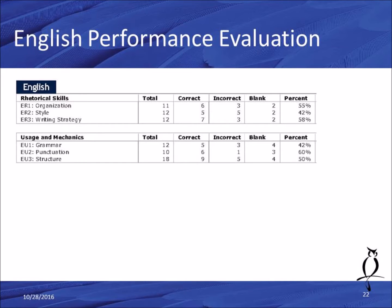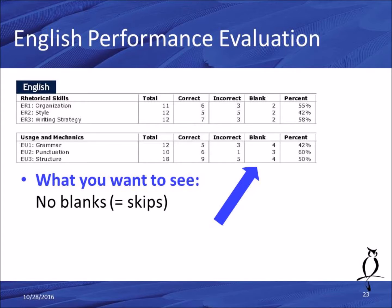Now let's return to your score report and look at the section entitled English — your English performance evaluation. You'll see rhetorical skills and usage of mechanics, the two sections on the English test. The first column I want you to look at is the fourth column — blanks. You want to see no blanks at all, no skips. Why? Because there's no wrong answer penalty, so you should never leave anything blank. If you bubble some answer, you have some chance of guessing correctly.